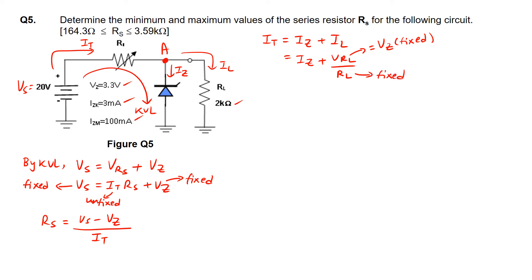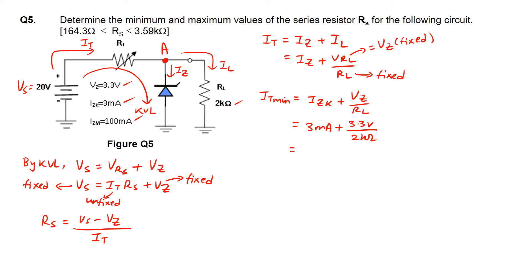To find It_min, we substitute Izk into Iz. So It_min equals 3 mA plus Vz over RL, which is 3.3 volts over 2 kΩ. This gives It_min equals 4.65 mA.